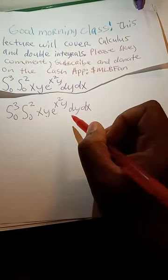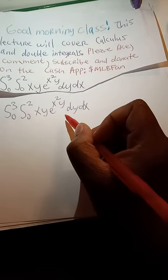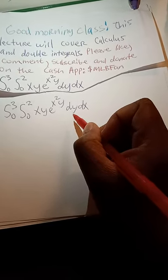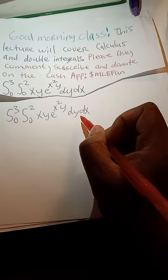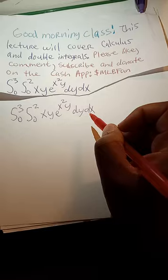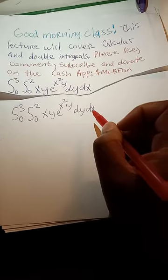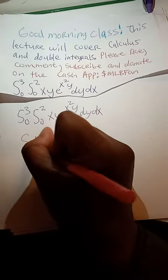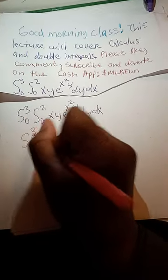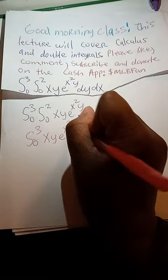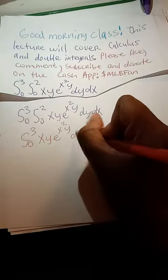dy comes first, so the integral for dy would be from 0 to 2, and dx the integral would be from 0 to 3. But we have to start with the integral for dx, which would be from 0 to 3 — so from 0 to 3 of x, y, e to the x squared y, dx.